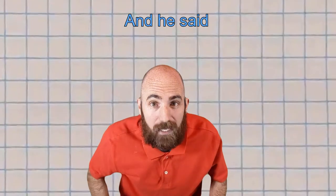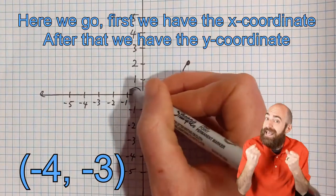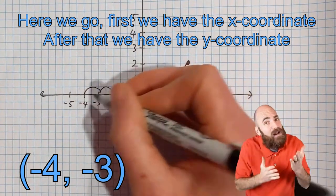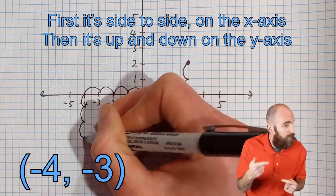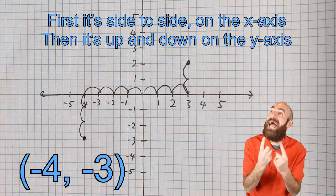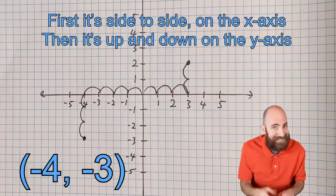And he said, here we go. First we have the X coordinate. After that we have the Y coordinate. First it's side to side on the X axis. Then it's up and down on the Y axis.